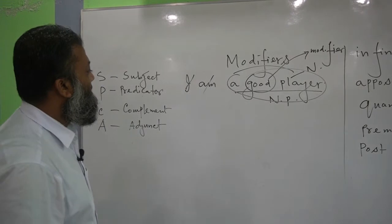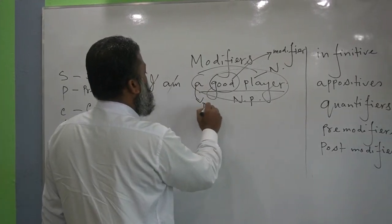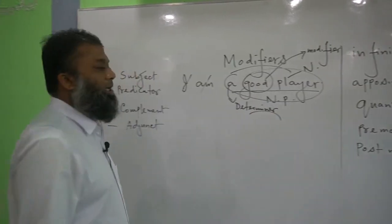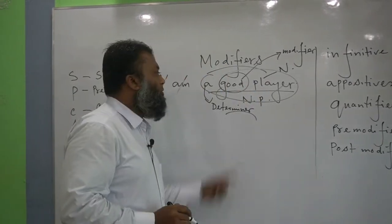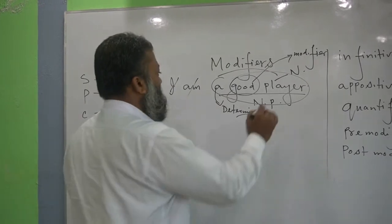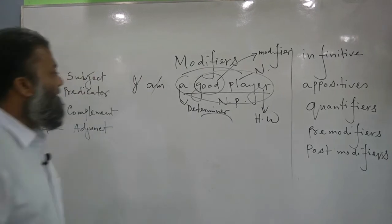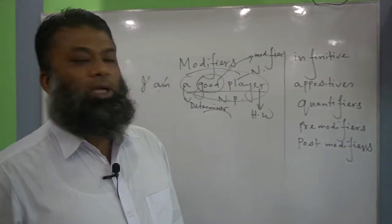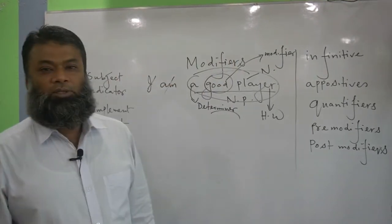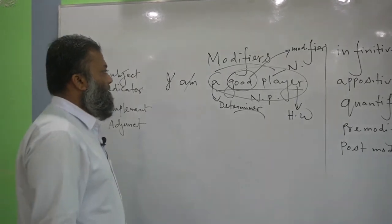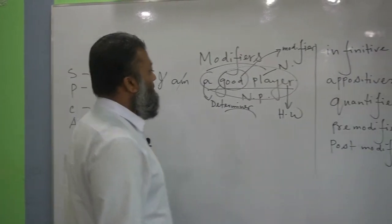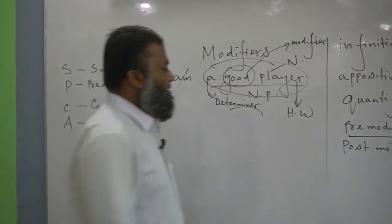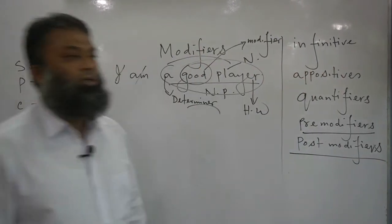Please pay attention: this 'a' is called the determiner — it fixes the number. And 'good' modifies the player, which is the head word. This noun is called the head word here. The head word is explained by the modifiers. Modifiers may take position before the head word, and they may take position just after the head word. Before and after — these two positions have two names. If it takes position before the noun, it is called a pre-modifier; if it takes position just after the head word, it is called a post-modifier.